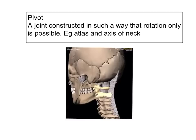The pivot joint is constructed in such a way that rotation only is possible. It's at your neck — the area between your head and your vertebra. It's called the atlas and axis of the neck.